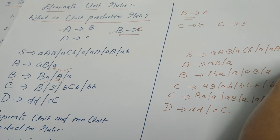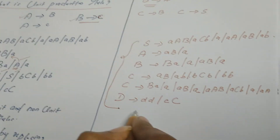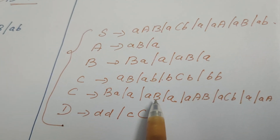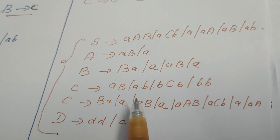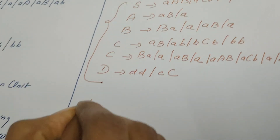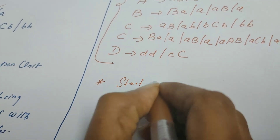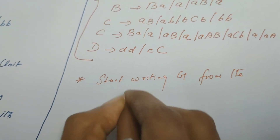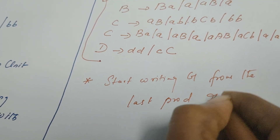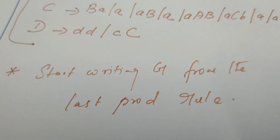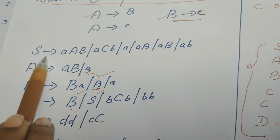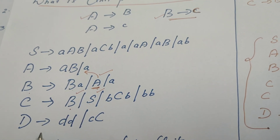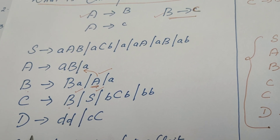The definition of S also has no change — we write it as it is: S derives ACB | A | AAB | A. This is the final grammar after eliminating unit production rules. There is no single variable on the right-hand side anywhere. The key point to remember is to always start writing the grammar from the last production rule — this ensures you don't miss any variable definition. We write from D, not from S. I hope you understood this. If you have any doubts or comments, please leave them in the comment section. Thank you.